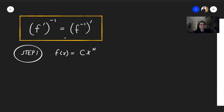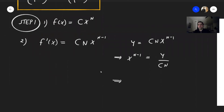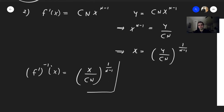This is a good guess. Now let's calculate the derivative. By the power rule, f'(x) = cn · x^(n−1). Now we want to find the inverse. So if y = cn · x^(n−1), this gives x^(n−1) = y/(cn). Taking the (n−1)th root, we get x = (y/(cn))^(1/(n−1)). Assume x and y are positive so that we do have an inverse. Therefore, the inverse of the derivative is (x/(cn))^(1/(n−1)).